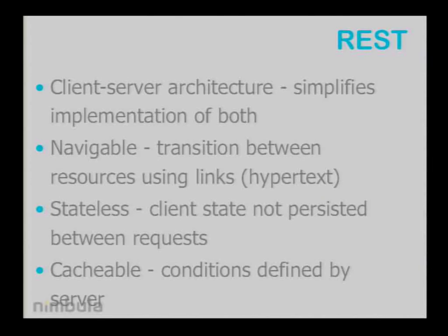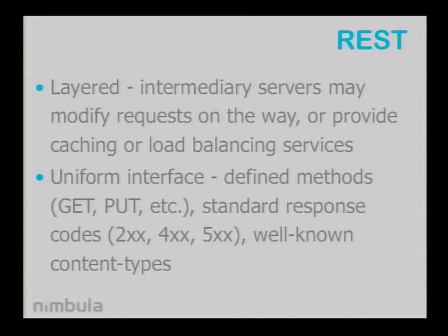REST is stateless — a server should never carry a client's information from request to request; it should all come in from the client. And it's cacheable on conditions defined by the server. REST also benefits from a lot of intermediary servers which can be placed on top of it. The specification tries to say that a client should never be aware of what's between it — there might be proxies, caches, routers — but it will think that it's speaking to a server directly. There's also a uniform interface with defined methods in the HTTP spec: GET, PUT, POST, DELETE, HEAD, and a couple of others. And standard response codes: the 200 series for success, 400 for client errors, 500 for server errors. Having well-known content types allows the representation of resources to work nicely.